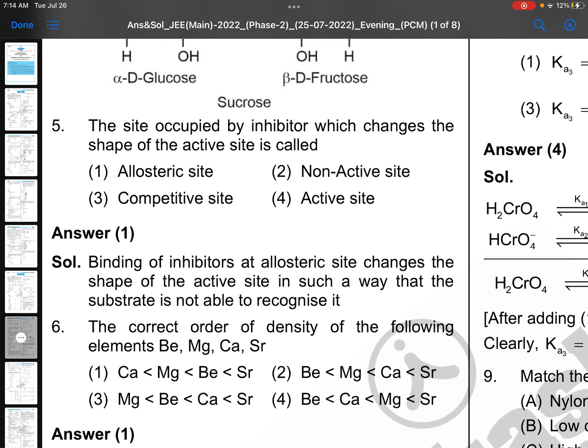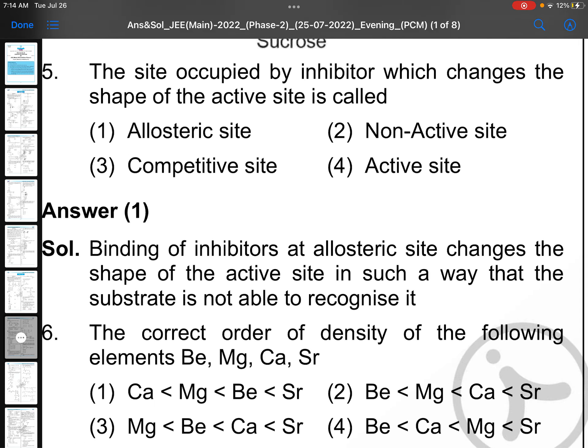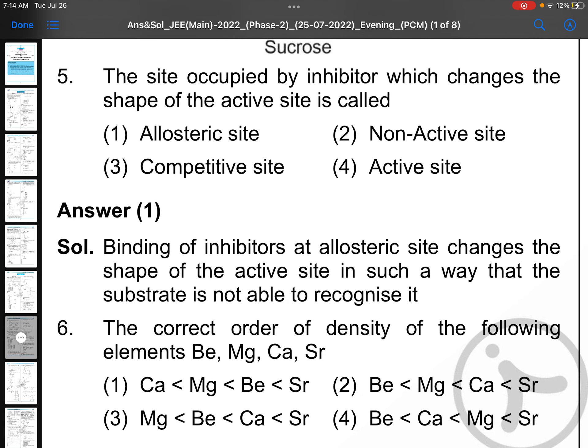The site occupied by inhibitor which changes the shape of the active site is called allosteric site, because of that the structure, the shape is changed so that it won't be attacked.